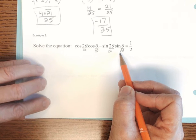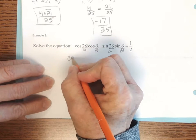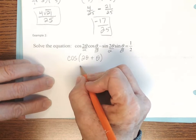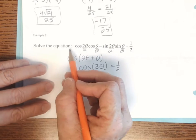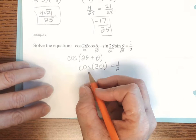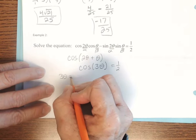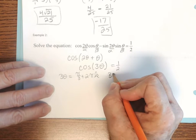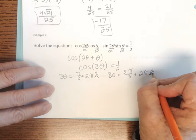That expression matches the formula for cosine of alpha plus beta. So combining, we get cosine of 2 theta plus theta, which is cosine of 3 theta equals 1 half. Now we solve for the angles on the unit circle where cosine equals 1 half: 3 theta equals pi over 3 plus 2 pi k, and 3 theta equals 5 pi over 3 plus 2 pi k, where k is an integer.